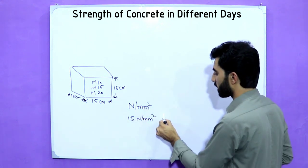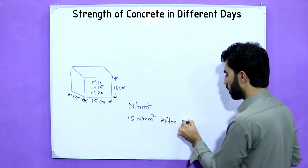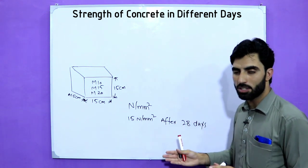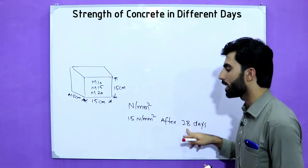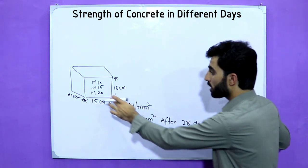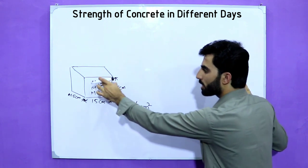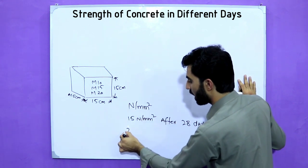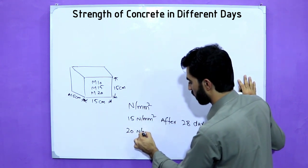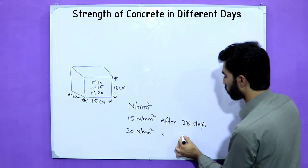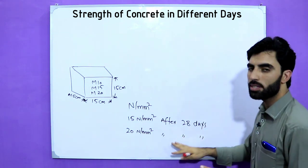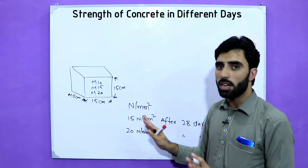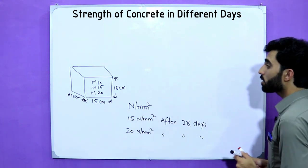For example, if this cube is M15 grade concrete, it will give us 15 Newton per mm square strength after 28 days. If it is M20 grade concrete, it will give us 20 Newton per mm square after 28 days. The same applies for M5, M7.5, M25, or any other grade.